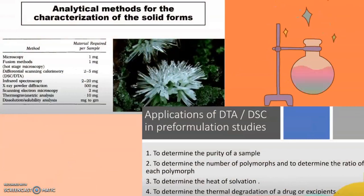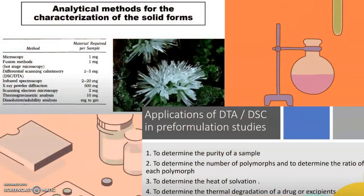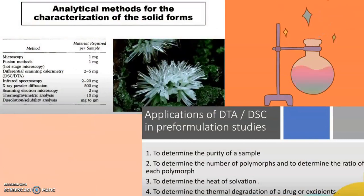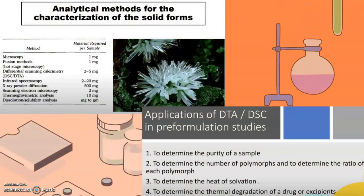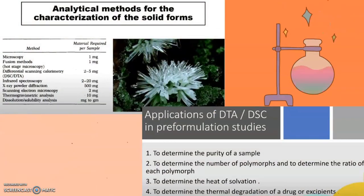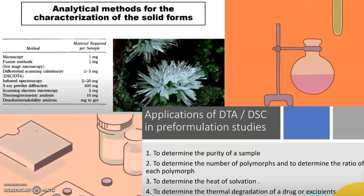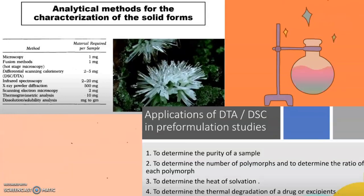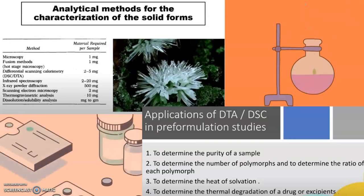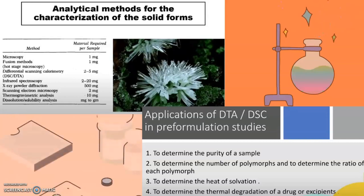Analytical methods for the characterization of solid forms include microscopy, fusion methods (hot stage microscopy), differential scanning calorimetry (DSC or DTA), infrared spectroscopy, x-ray powder diffraction, scanning electron microscopy (SEM), TGA (thermo-gravimetric analysis), and dissolution and solubility analysis.